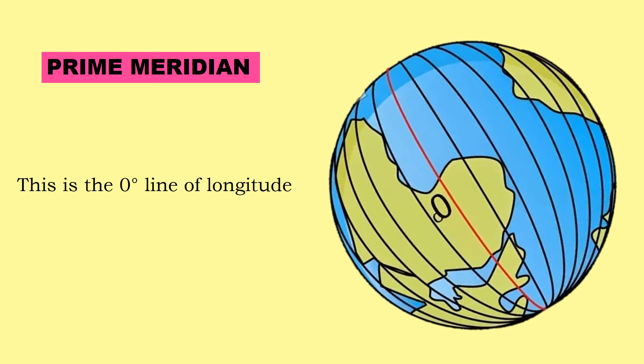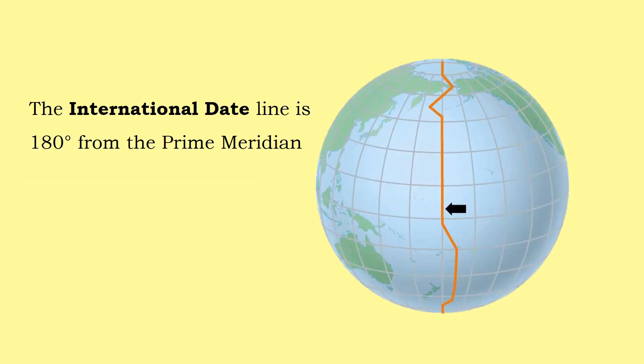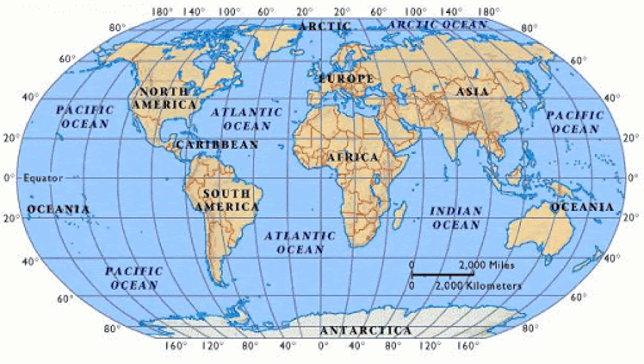The International Date Line, another line of longitude, is located at about 180 degrees either east or west of the Prime Meridian. Lines of latitude and longitude together form a grid on maps. They help us to find places on Earth.